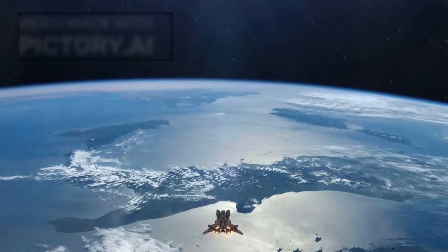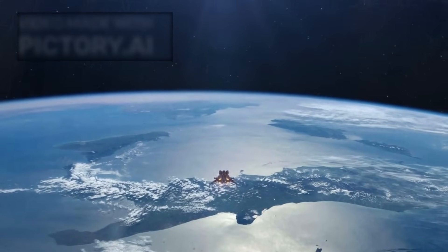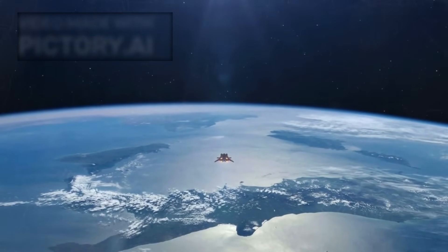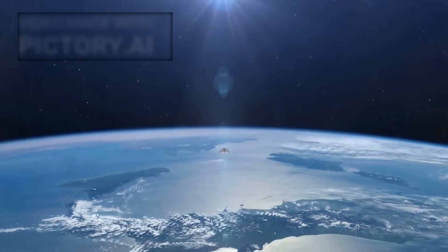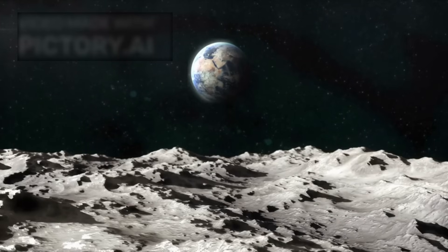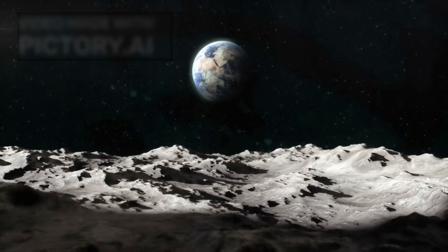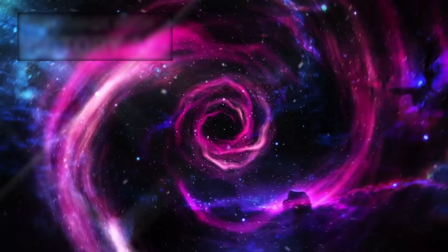As Voyager 1 races through interstellar space at over 38,000 miles per hour, and Voyager 2 at slightly slower speeds, they carry more than instruments and circuitry. They carry the story of a species that dared to reach beyond its own world. The story of us.